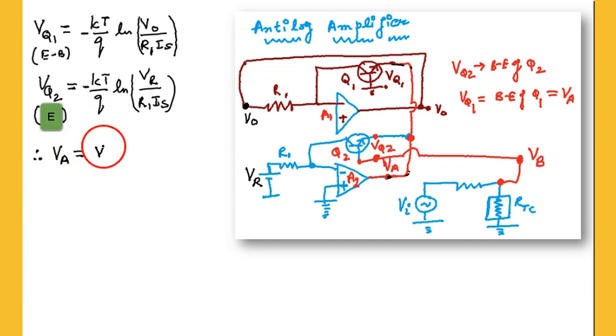So one thing to remember, VQ1 is between the emitter and the base of Q1, whereas VQ2 it is only at the emitter node with respect to base here. And next thing to remember, VA is same as that VQ1. So VA is same as VQ1.